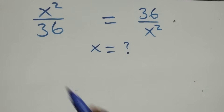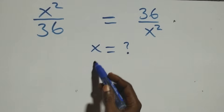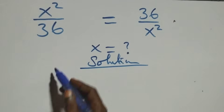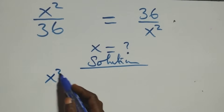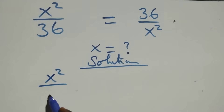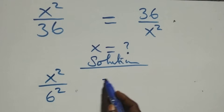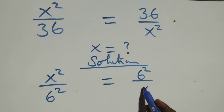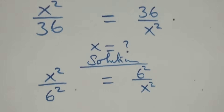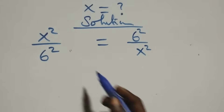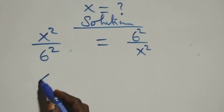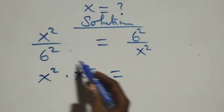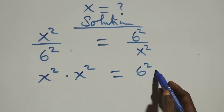Hello, you are welcome. We will solve this algebra equation. We can write this as x² over 36 equals 6² over x², since 36 can be written as 6². The next step is to cross-multiply: x² times x² equals 6² times 6².